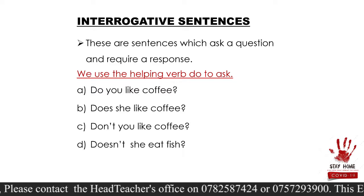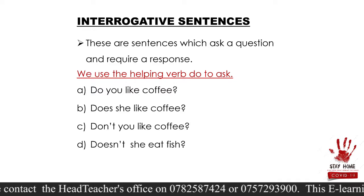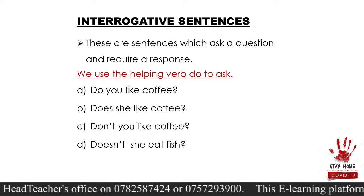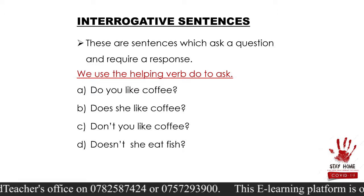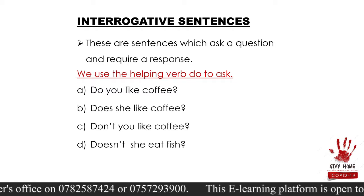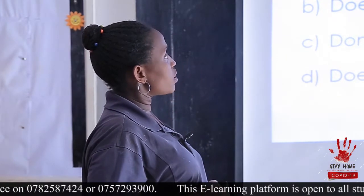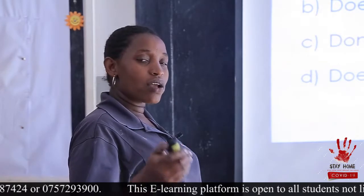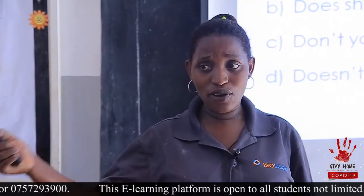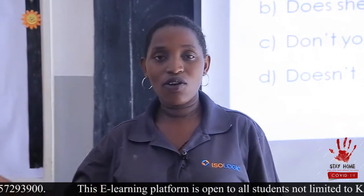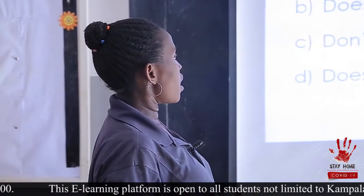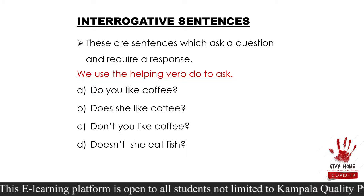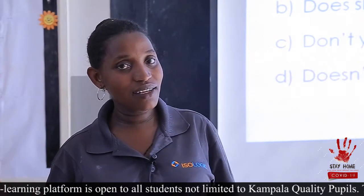In the simple present tense, we use the helping verb 'do' — or its form 'does' — to ask questions. For example: Do you like coffee? We expect the answer: yes, I like coffee, or no, I don't like coffee. Does she like coffee? The answer could be: yes, she likes coffee, or no, she doesn't like coffee.